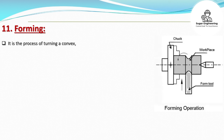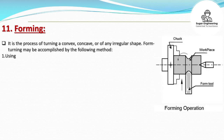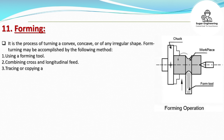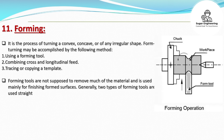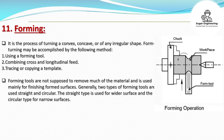Forming is the process of turning a convex, concave, or irregular shape. Form turning may be accomplished by using a forming tool, combining cross and longitudinal feed, or tracing/copying a template. Forming tools are used mainly for finishing formed surfaces and are not meant to remove much material. Two types of forming tools are used: straight, for wider surfaces, and circular, for narrow surfaces.